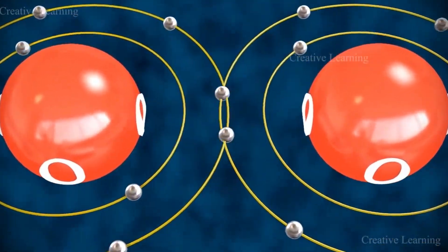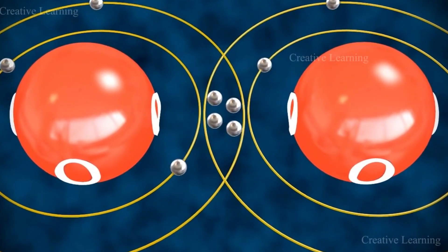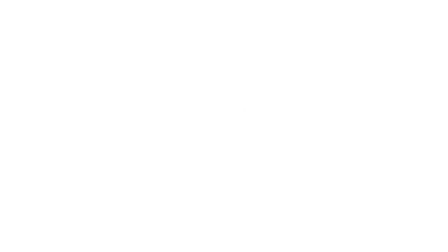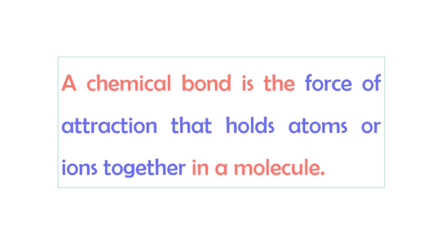How these atoms are joined together to form substances? They form stable chemical substances by means of a chemical bond. A chemical bond is the force of attraction that holds atoms or ions together in a molecule.